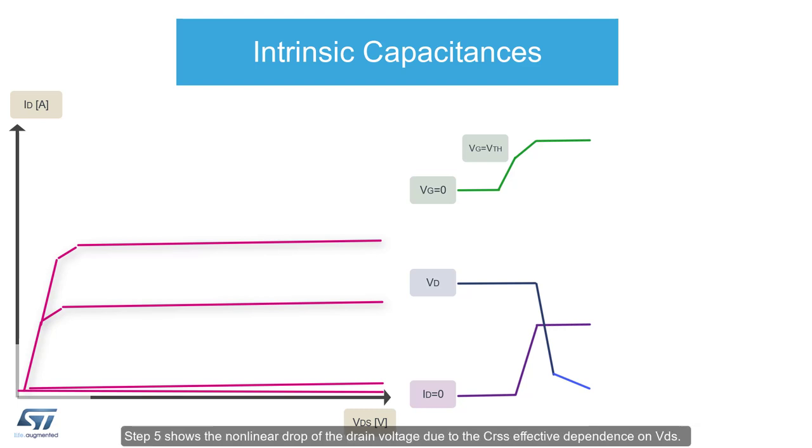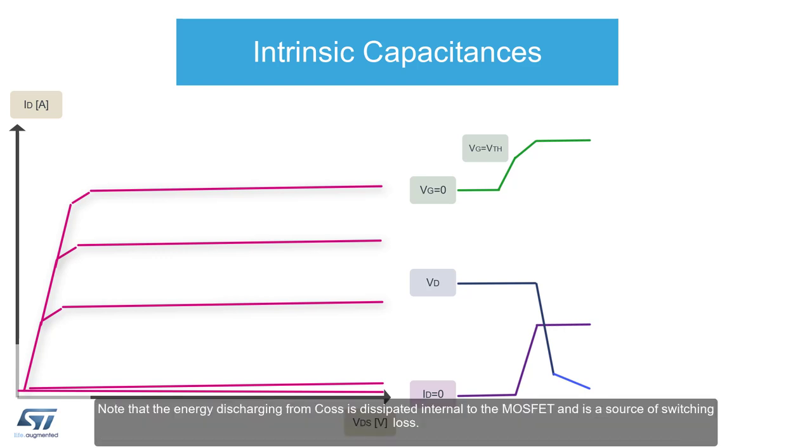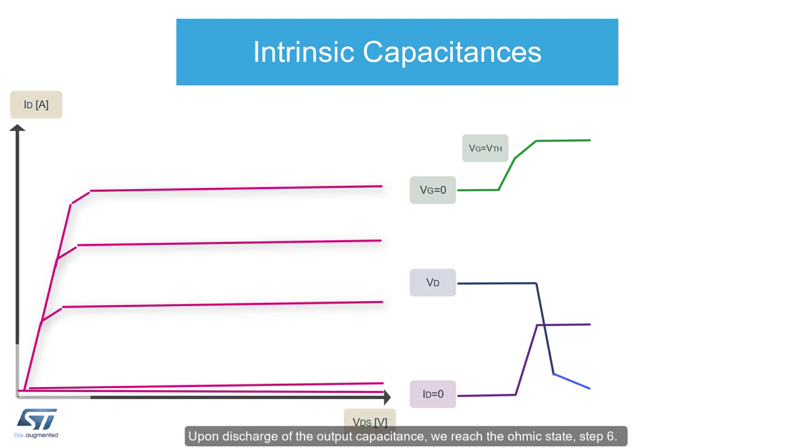Step five shows the non-linear drop of the drain voltage due to the CRSS effective dependence on VDS. Note that the energy discharging from COSS is dissipated internal to the MOSFET and is a source of switching loss. Upon discharge of the output capacitance, we reach the ohmic state, step six.